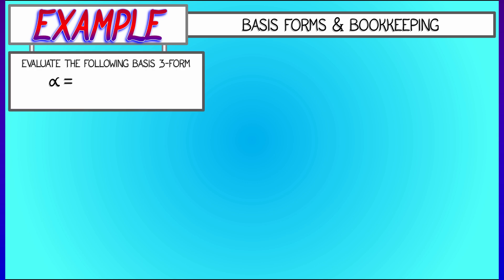In general, when you're working with these, there's some bookkeeping. You've got to be a little bit careful. Here's an example. Let's say we've got the three form, the basis three form alpha, given by dx_3 wedge dx_5 wedge dx_2.